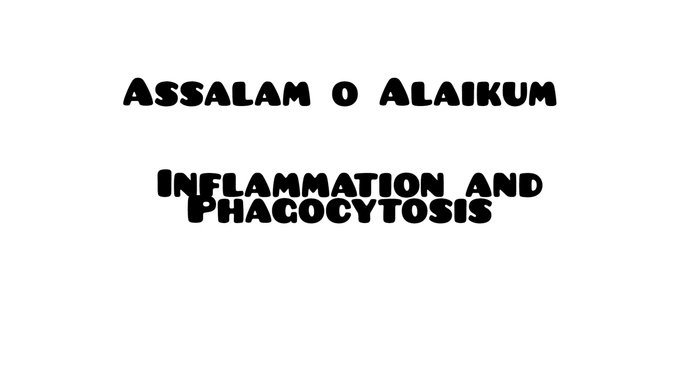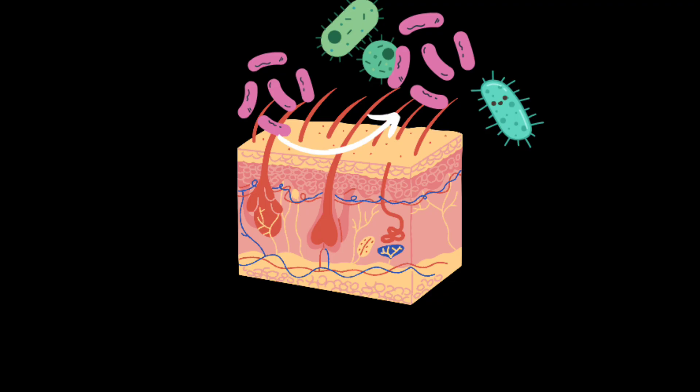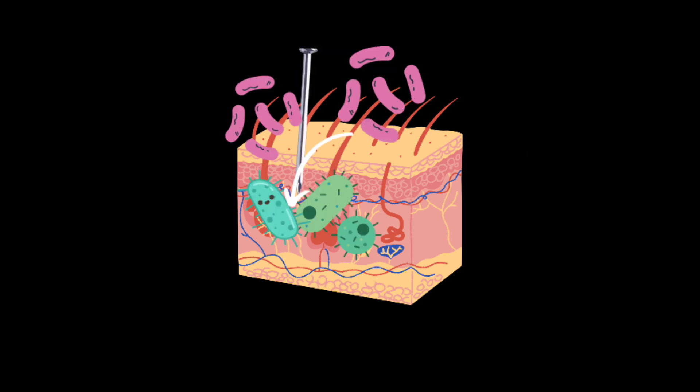In the previous video we talked about the intact skin — the intact skin is the first line of defense against many organisms. As long as the skin remains intact, the pathogens or organisms that can cause infection cannot enter into the body. But when there is injury or damage to the epithelial lining of the body, the organisms get a portal of entry through which they can enter into the body.